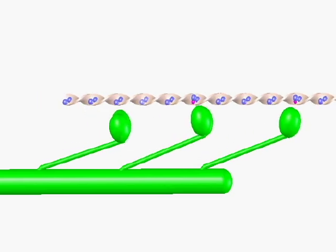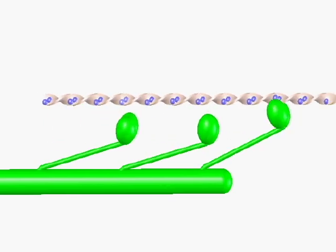The myosin head movements and chemical reactions occur very quickly, hundreds of times per second. So a continuous stream of energy or ATP must be available for the muscle to maintain a contraction.